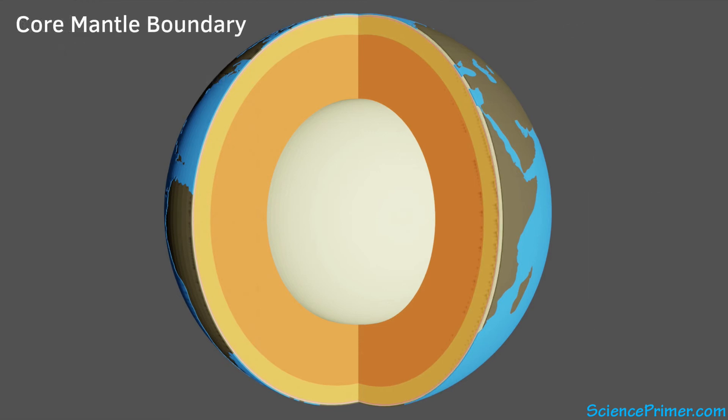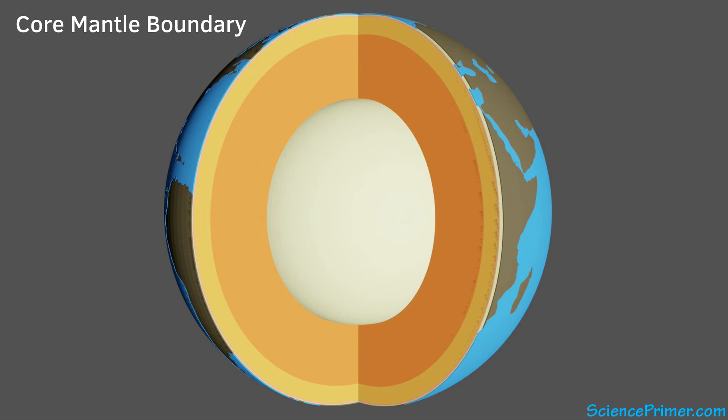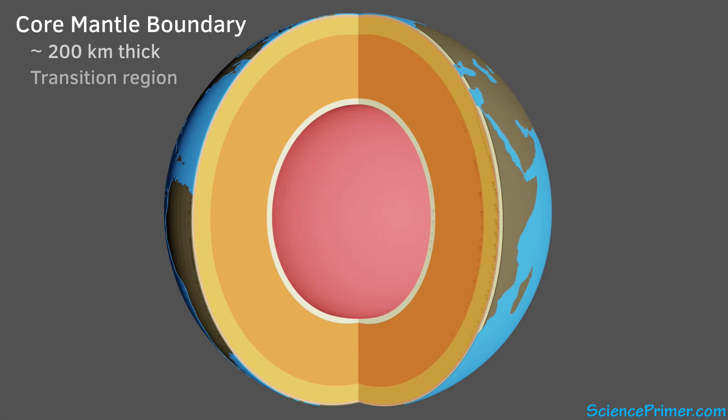At the base of the mantle is the core-mantle boundary. It is about 200 kilometers in thickness and includes a region where temperatures get hot enough to partially melt the mantle material right above the transition region between the mantle, which is dominated by silicate minerals, and the core, which is mostly iron.